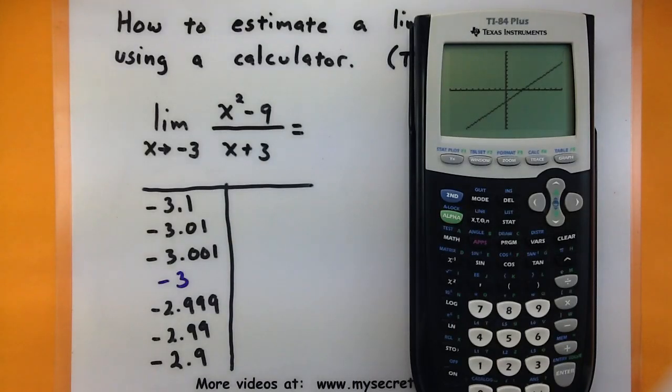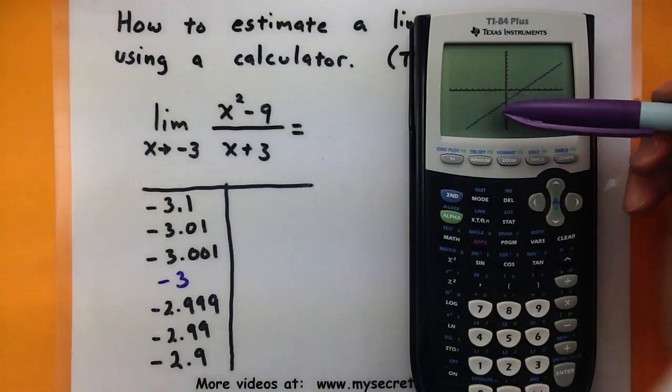Now let's go ahead and press our graph button to see what it looks like. As it draws it, you can see that our function looks like a pretty straight line. So I'll basically be choosing values close to negative 3 down here.